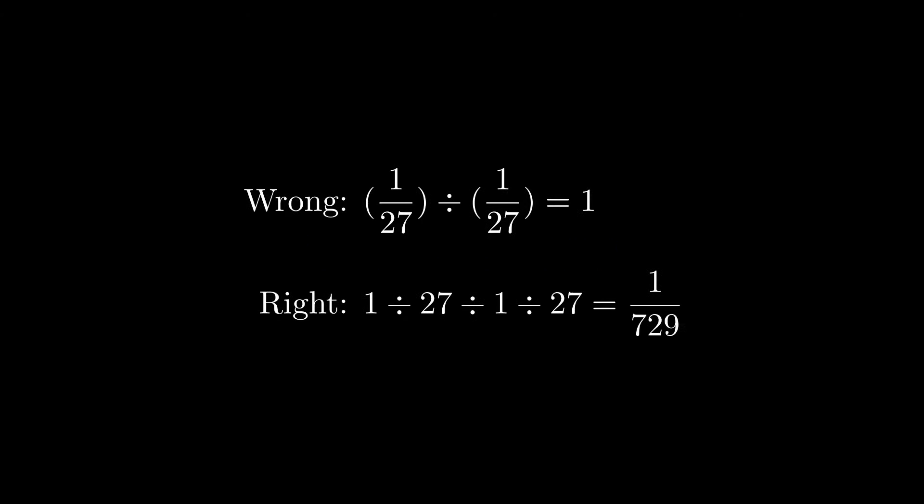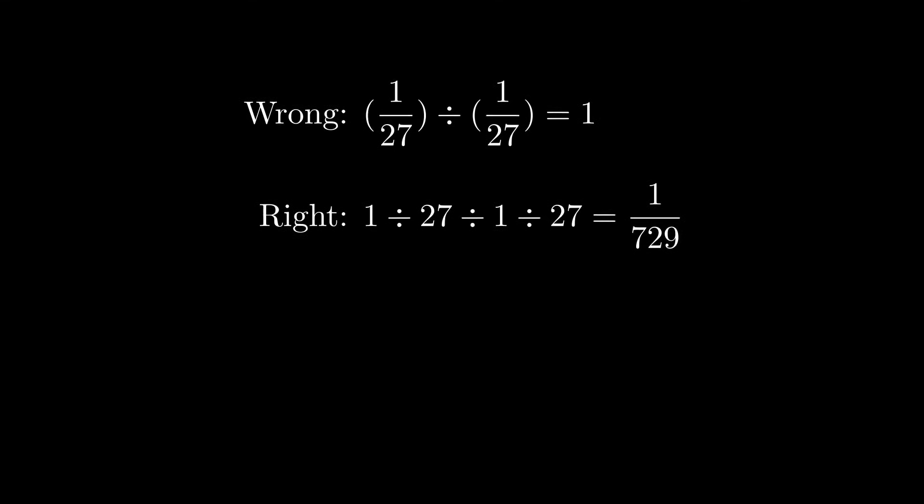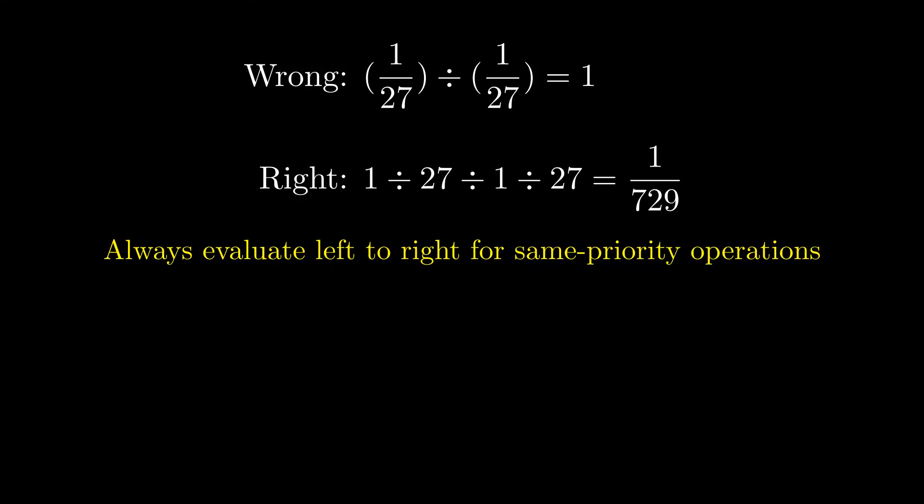So what's the lesson here? The difference between 1 and 1 over 729 comes down to a single principle. Division isn't associative. You can't regroup it. When you have multiple operations of the same priority, left to right isn't just a suggestion. It's the rule. And this problem shows exactly why that matters.